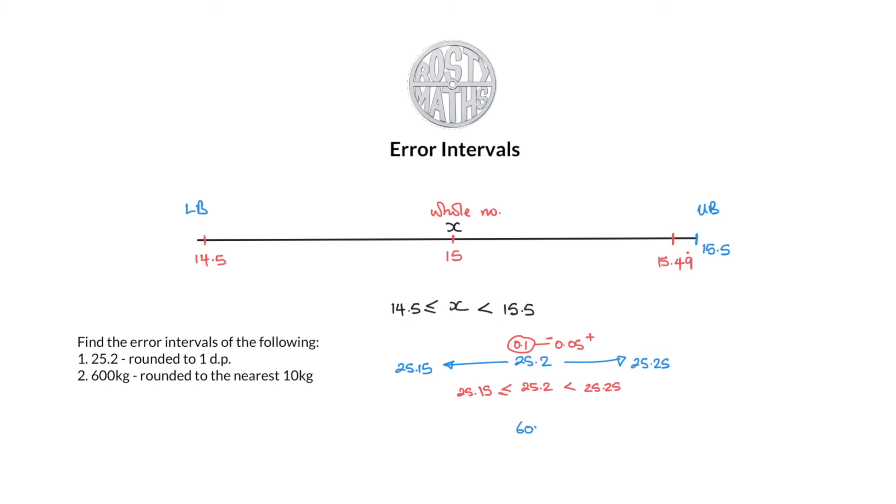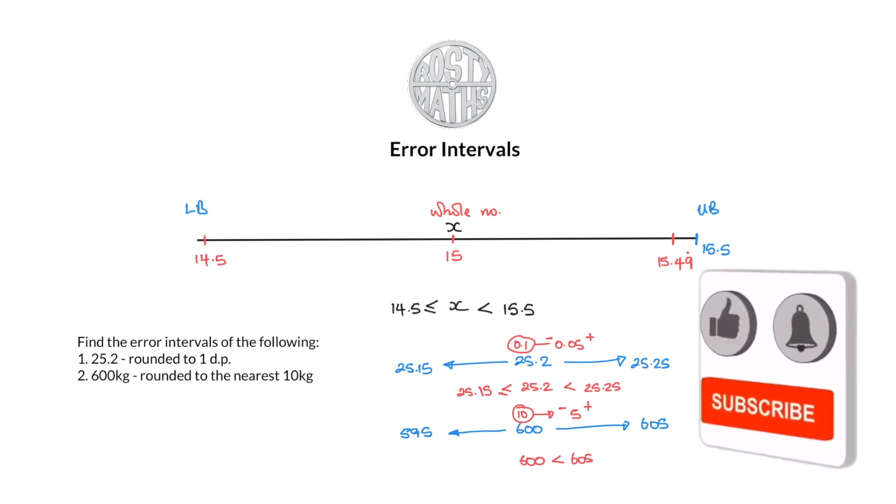I have got 600 kilograms and it's been rounded to the nearest 10 kilograms. So it's the nearest 10 kilograms, half of that 10 kilograms is 5 kilograms. Adding 5 kilograms would be 605 kilograms for the upper bound and 595 kilograms for the lower bound. That means my error interval for 600 kilograms will be less than 605 but greater than or equal to 595.